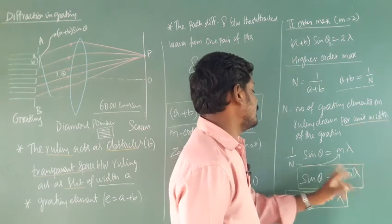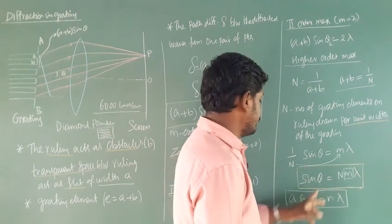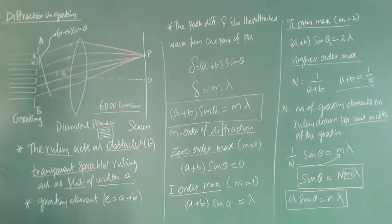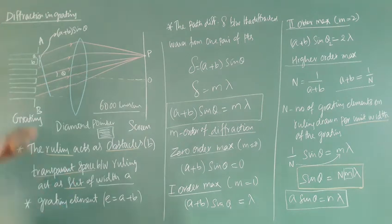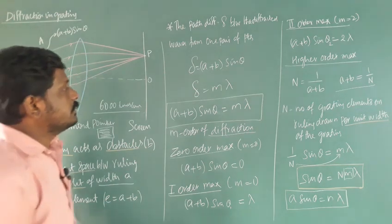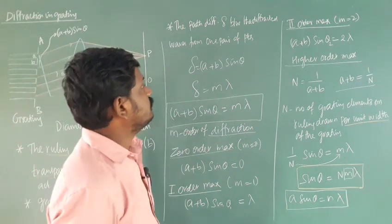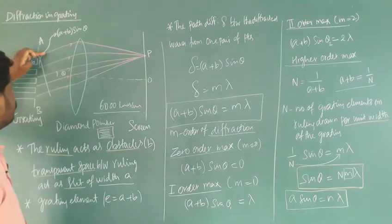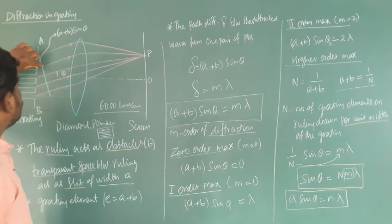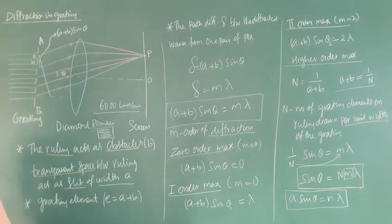In summary, in diffraction by a grating: the rulings act as obstacles, the transparent spaces between the rulings act as slits, and the grating element equals A plus B. The path difference between diffracted waves is delta equal to (A plus B) sin theta.